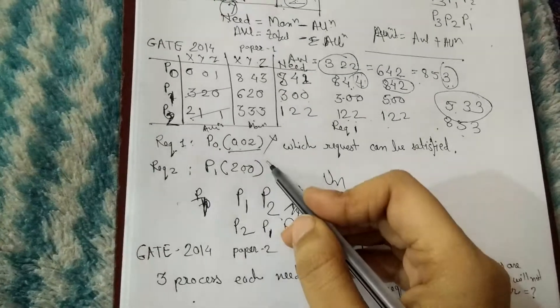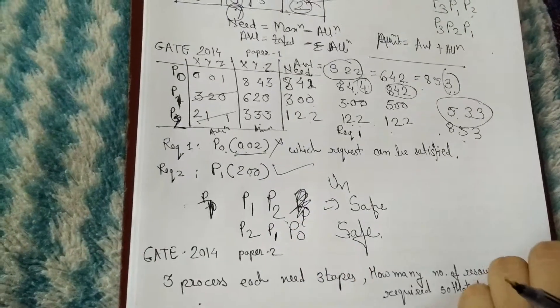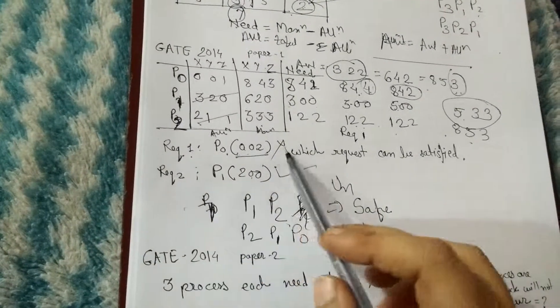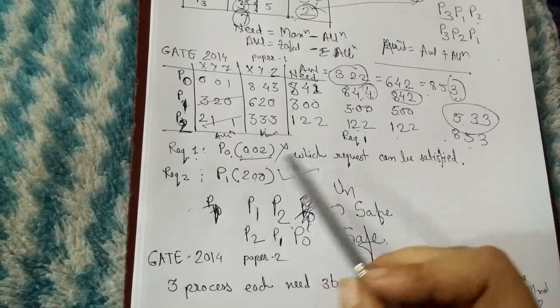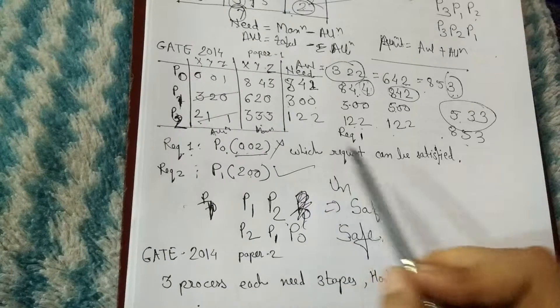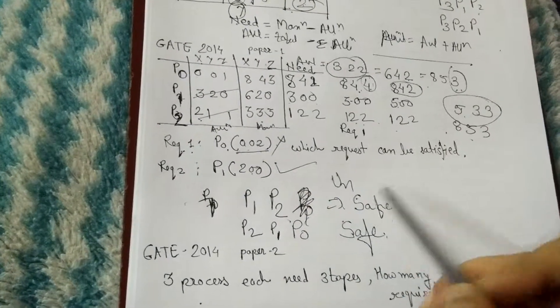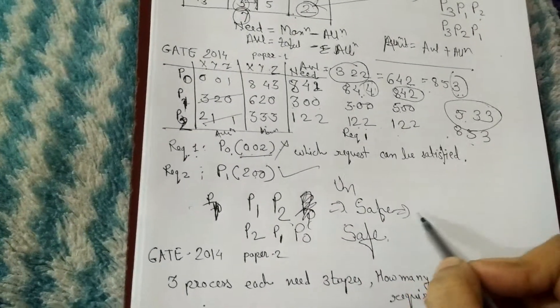So only Request 2 will be satisfied. Request 1 will not be served because it would result in an unsafe state or a deadlock.